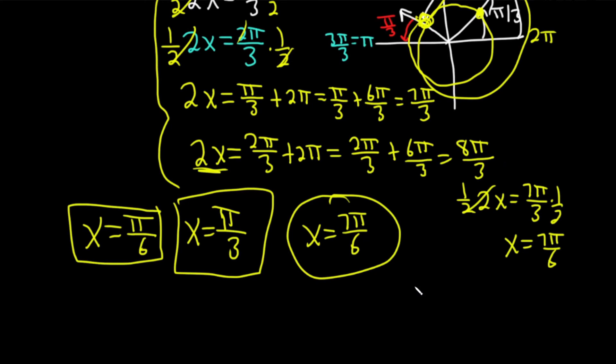And the last one we have to solve for is 2x equals 8π over 3. So 2x equals 8π over 3. And again, multiplying by 1 half, we're going to get x equals 4π over 3 because 2 goes into 8 four times. So x is 4π over 3.